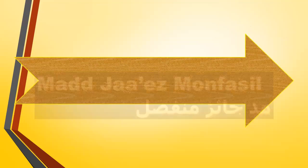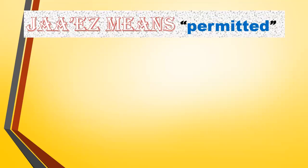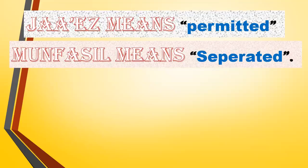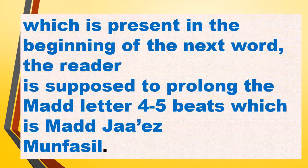Let's go to the second type of Madd today that depends on Hamza. It's Madd Ja'iz Munfasil. Ja'iz means permitted, and Munfasil means separated. If a Madd letter — Aleph, Waw, or Ya — present at the end of a word is followed by a Hamza which is present at the beginning of the next word, the reader is supposed to prolong the Madd letter four or five beats. This is Madd Ja'iz Munfasil.